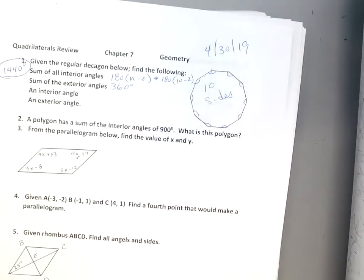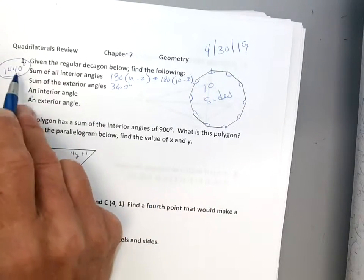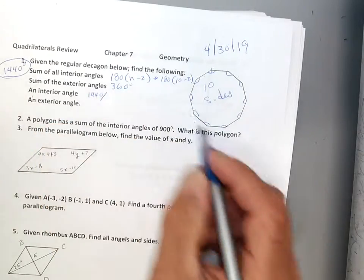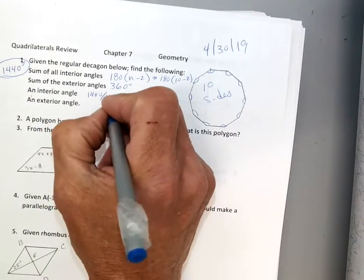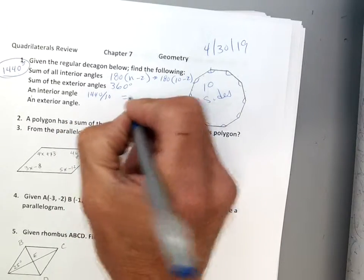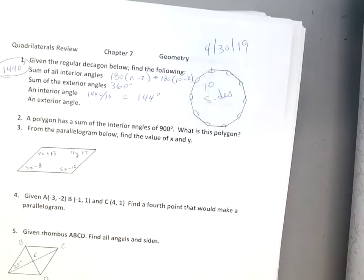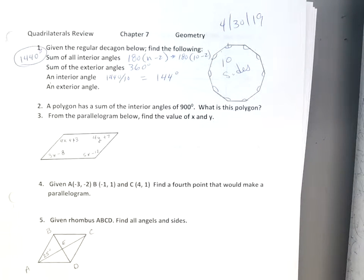Exterior angles, regardless, are always 360 degrees. Okay? Always. It doesn't matter what the figure is. The answer is always just 360. Okay? Now, an interior angle, to get an interior, an individual interior angle, I'm going to take my answer from here, my 1,440, and I'm going to divide it up into 10 because there's 10 different angles.